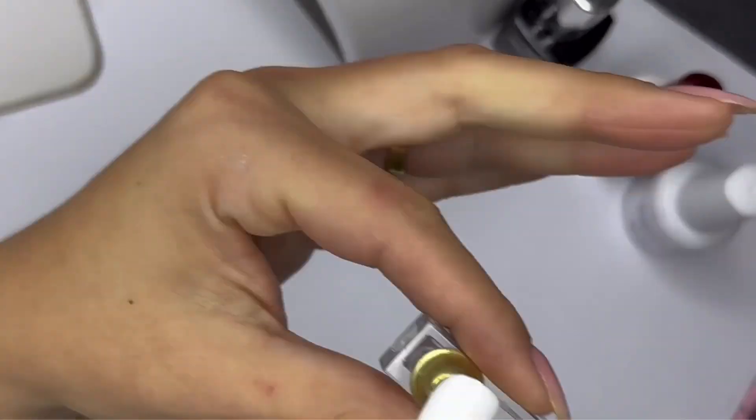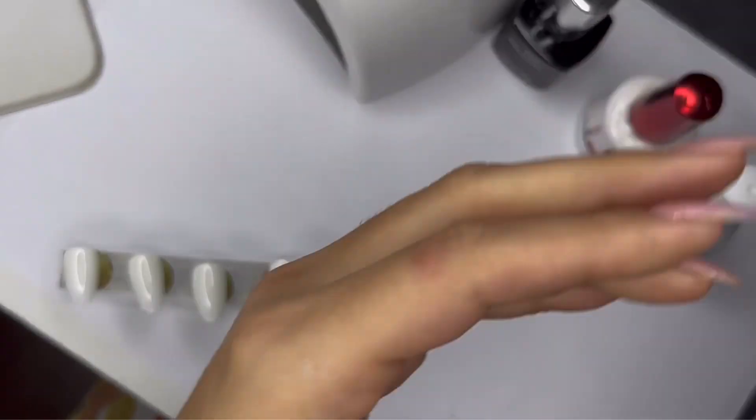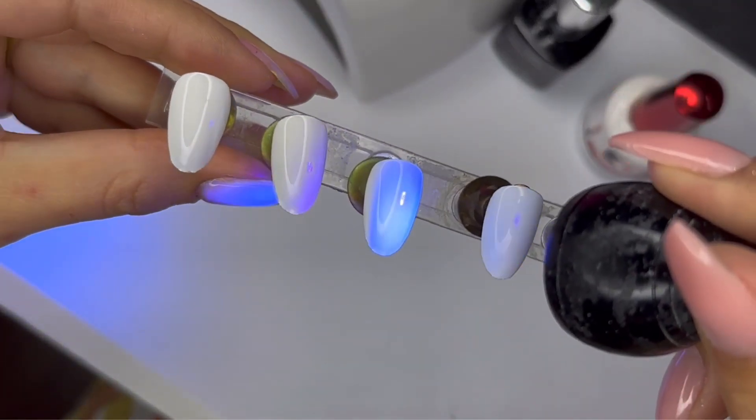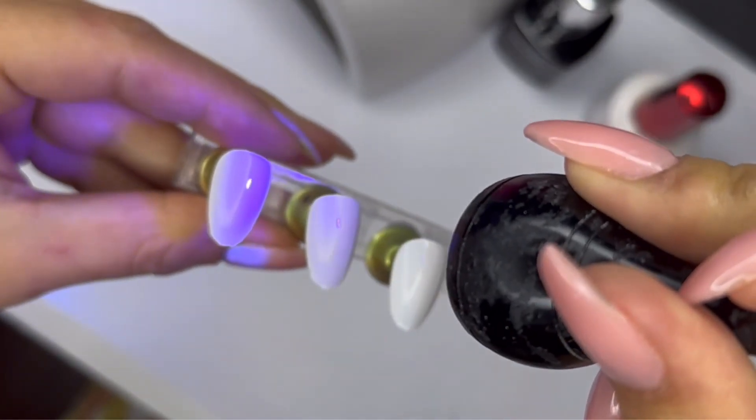Right away you can tell that the last two, which are the American Creator and the Valentino top coat, have UV protection. And the first two, which are the Prey and the Koopa top coat, don't have UV protection.